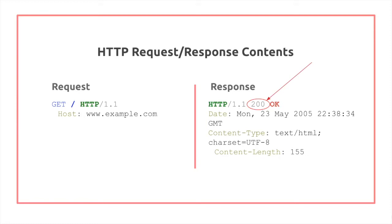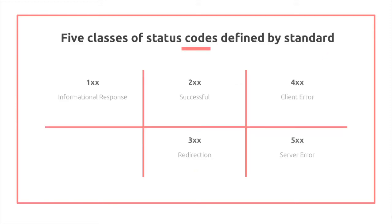There are five classes of status codes defined by the standard. The 100 series is the informational response. 200 is successful. 300s are redirection. 400s are client error. And 500s are server error.